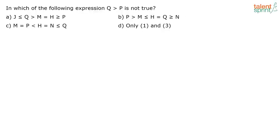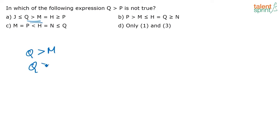So: in which of the following expressions is Q greater than P not true? J is less than or equal to Q, Q is greater than M, M is equal to H. Look at the first statement: Q is greater than M, and M is equal to H, so I can also say Q is greater than H. And it is given H is greater than or equal to P, so definitely Q is greater than P. So this is not the correct answer.